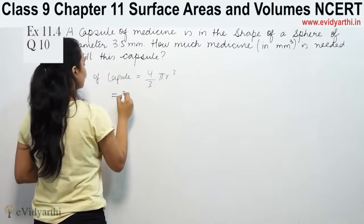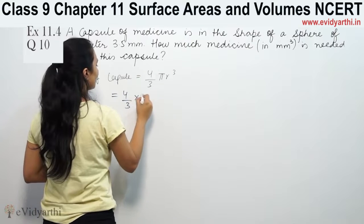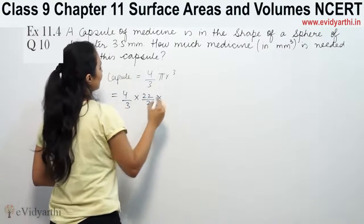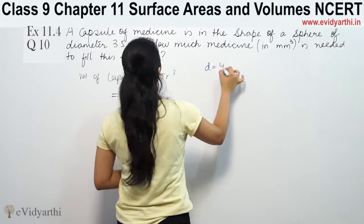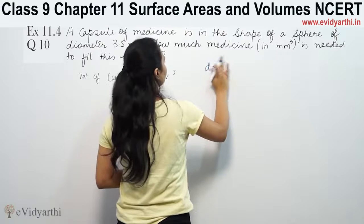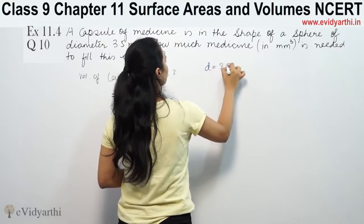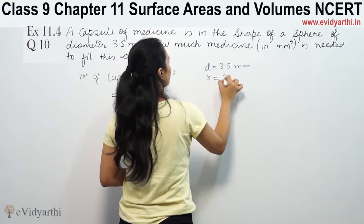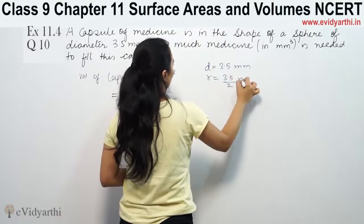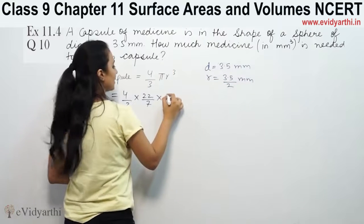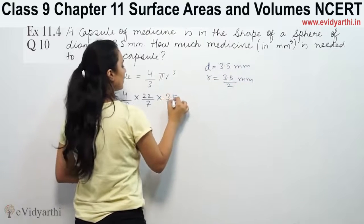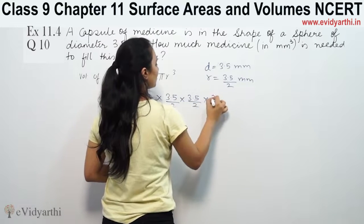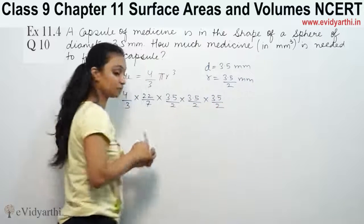So this is 4/3 × 22/7. The diameter given is 3.5 mm, so the radius will be equal to 3.5 ÷ 2 mm. So radius is 3.5/2 × 3.5/2 × 3.5/2.